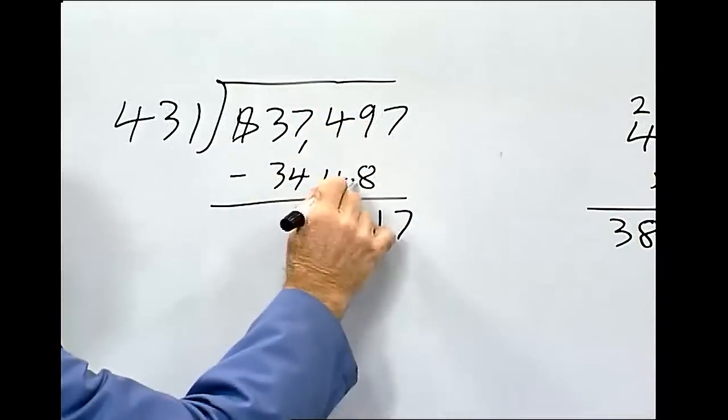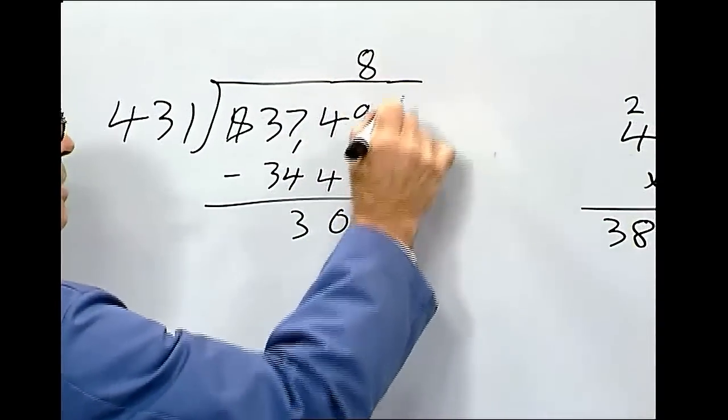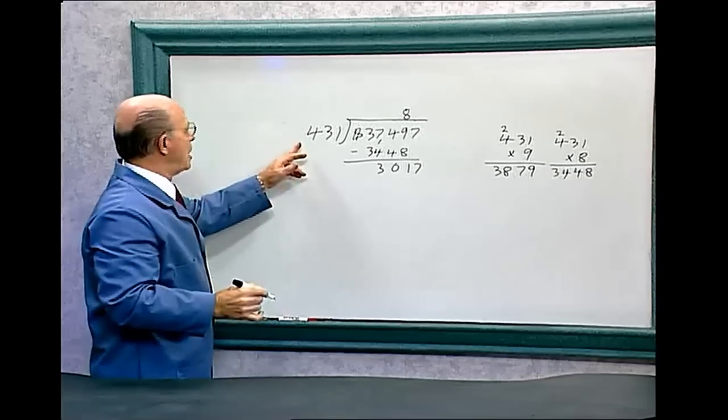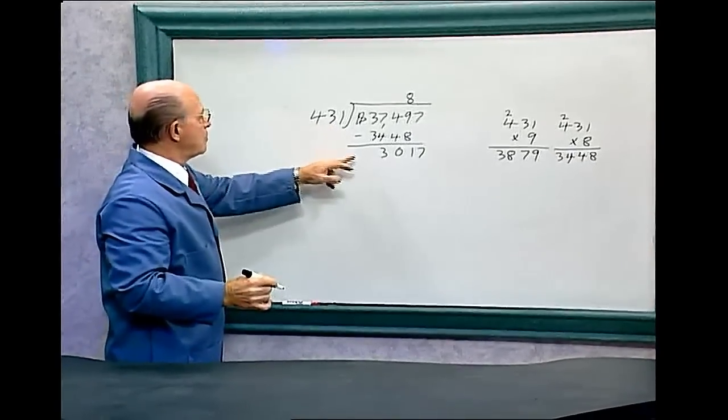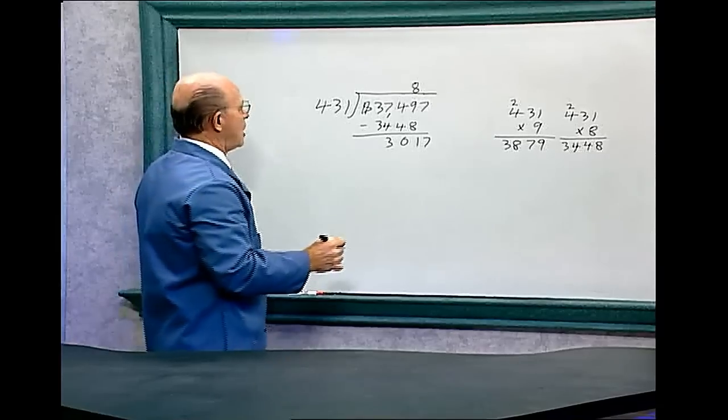Let's not forget, this is 4 digits, so that number comes over here. This is 8. And how many times is 431 going to 3,017? Let's try 7 times.